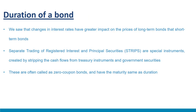We will discuss the concept of duration for fixed income securities and its role in interest rate risk management. Changes in interest rates have a greater impact on long-term bonds than short-term bonds. However, 'short-term' and 'long-term' are vague references for fixed income securities. Consider STRIPS — separate trading of registered interest and principal securities — where only one cash flow occurs at maturity, with no coupon payment. These are called zero-coupon bonds. A STRIPS with 30-year maturity has a single payment at the end of 30 years, and it is not misleading to say this bond has a duration of 30 years.